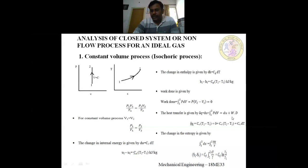For heat transfer, we apply the first law for a closed system undergoing a change of state: ΔQ = ΔU + W. Here the gas was initially at state point 1, heated, and changed to state point 2. Since work done is zero for a constant volume process, ΔQ = Cv·dT = Cv(T2 − T1).